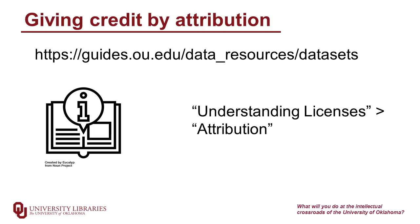The next two links are examples for software licenses. If you recall from the previous video, software and data have different needs from Creative Commons, so that's why they often use different licenses. For software in particular, if you are uncertain, please contact the intellectual property office or a lawyer.